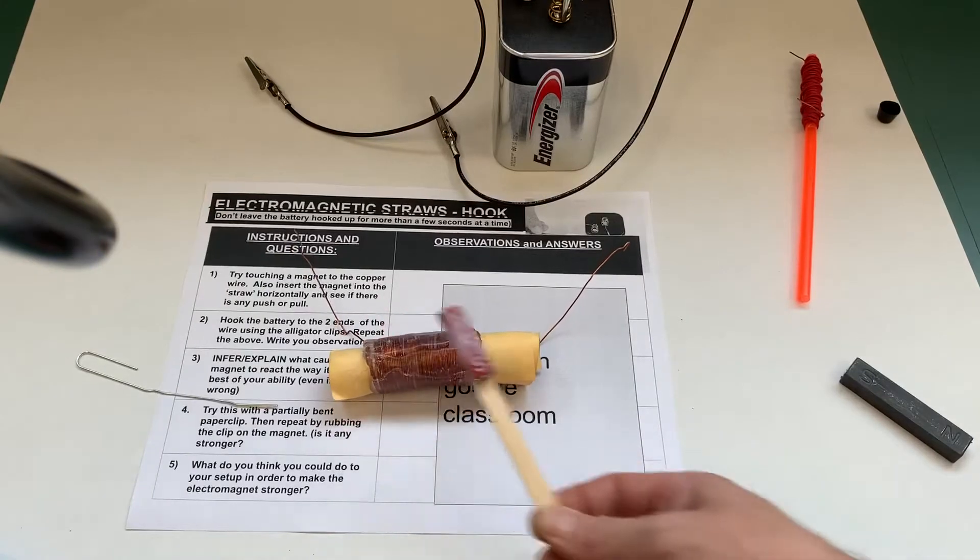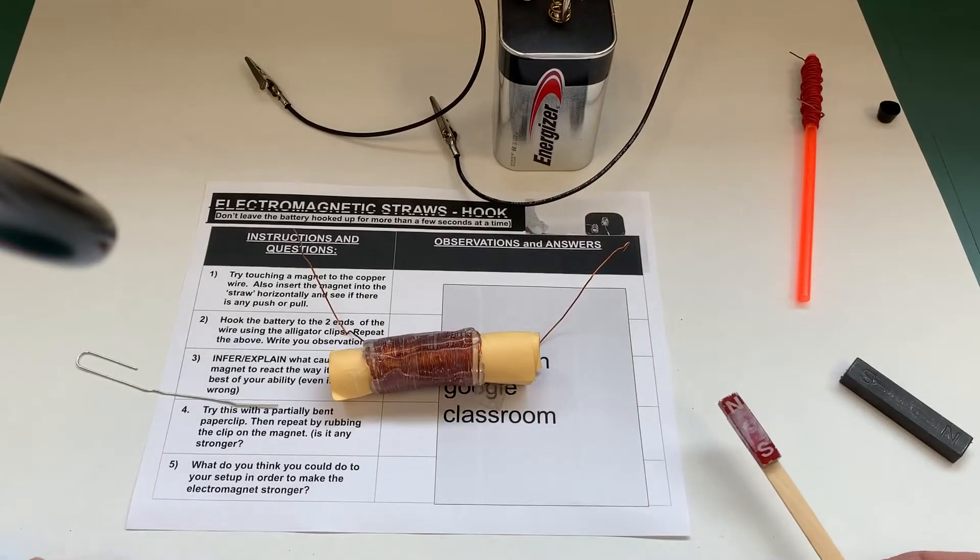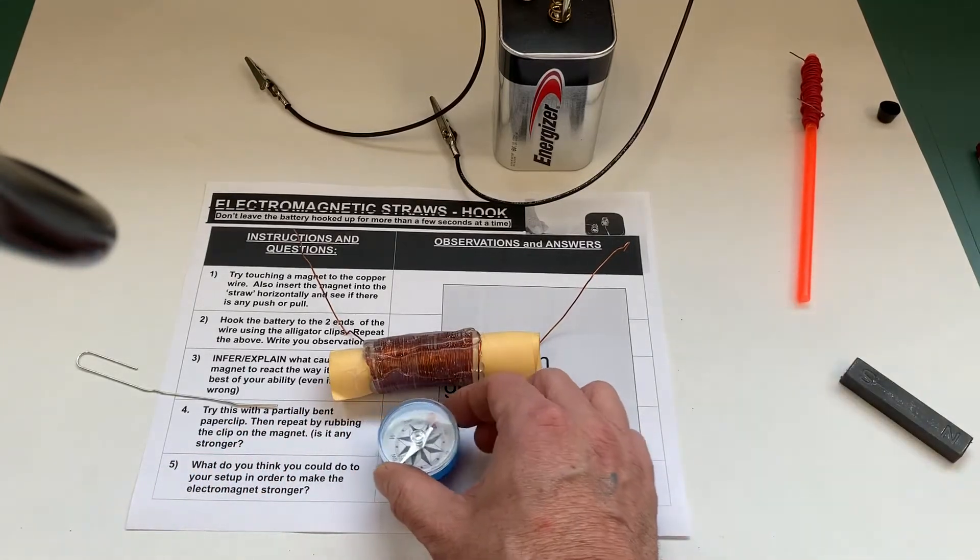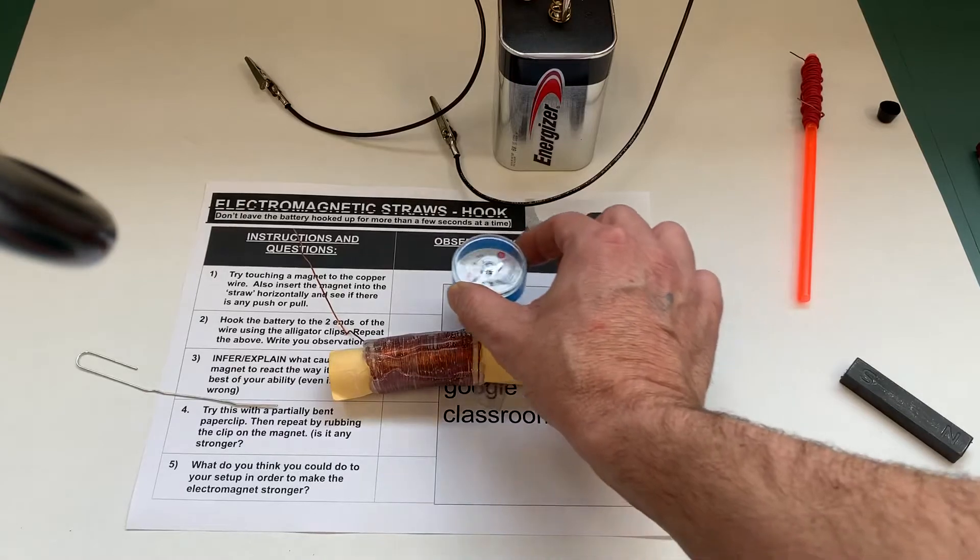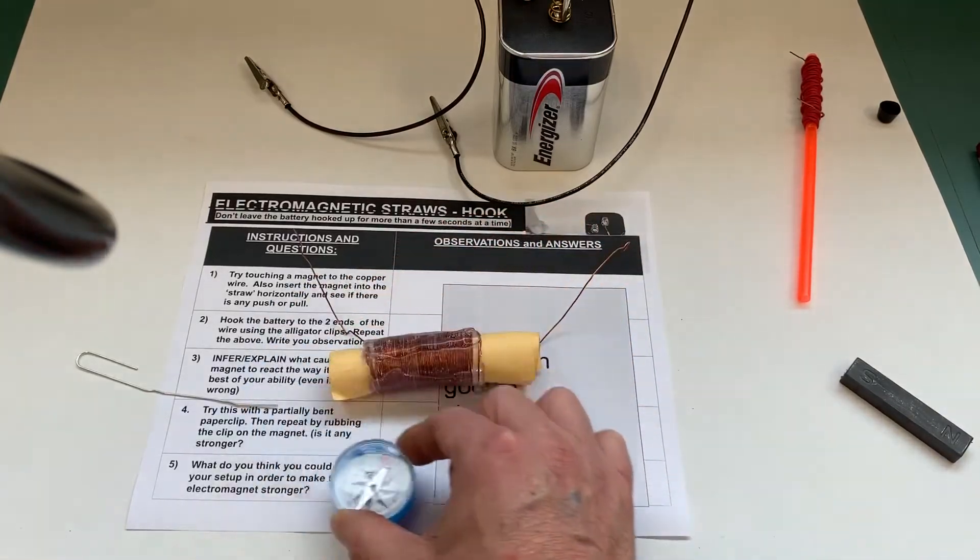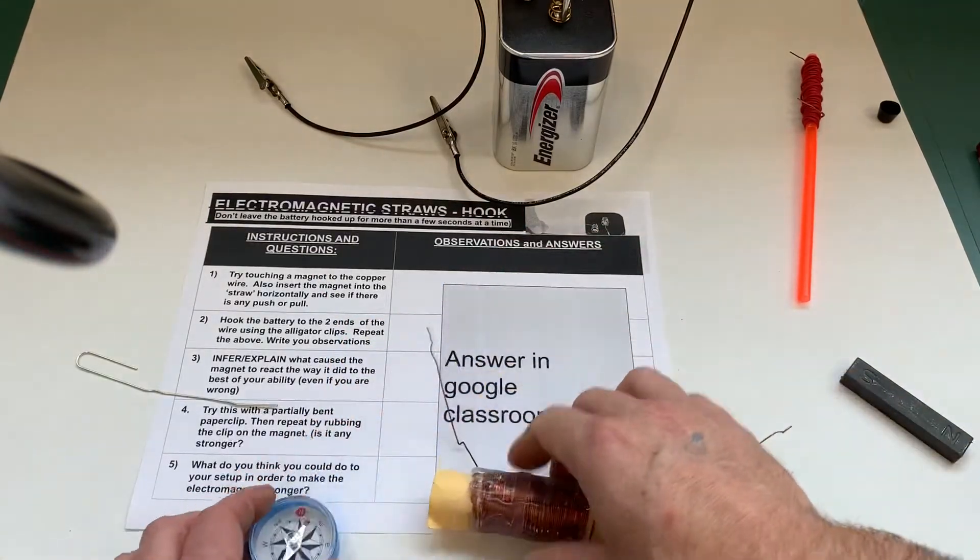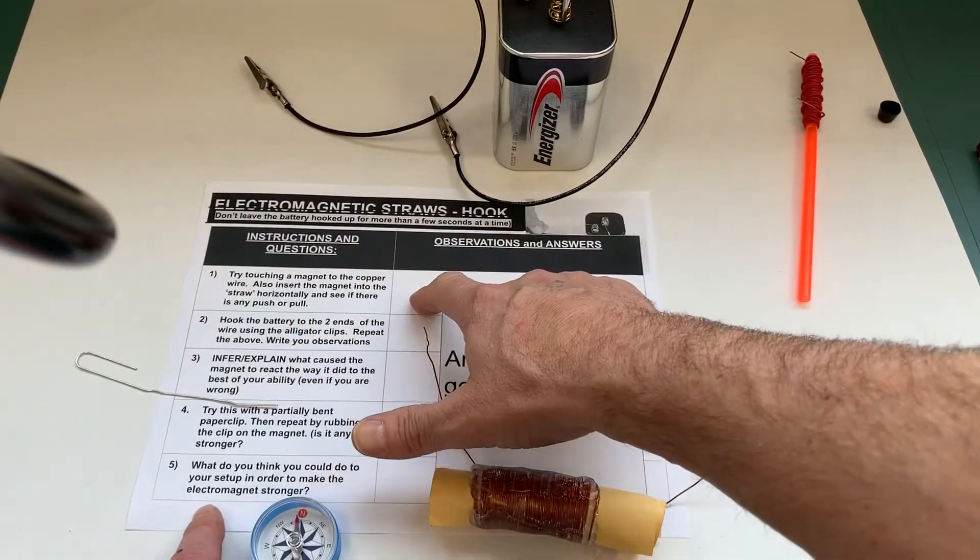Also see if this is magnetic at all and then also see if it affects a compass. Make sure you don't have any magnets nearby and just simply do something like this and see if the compass stays in the same orientation. When you do that you're gonna write your observations over here.